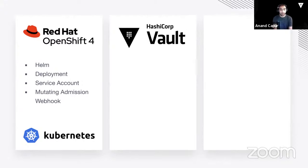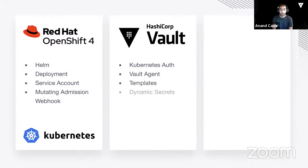Then we'll be using Vault. Within Vault, we'll be using the Kubernetes auth method, which allows our containers to authenticate against Vault without having to pre-generate and provide tokens to them. We'll be using the Vault agent, Vault agent templates, dynamic secrets, and what's called Vault K8s — a package created by HashiCorp to help run Vault within Kubernetes, which provides the Vault agent we're going to be using.